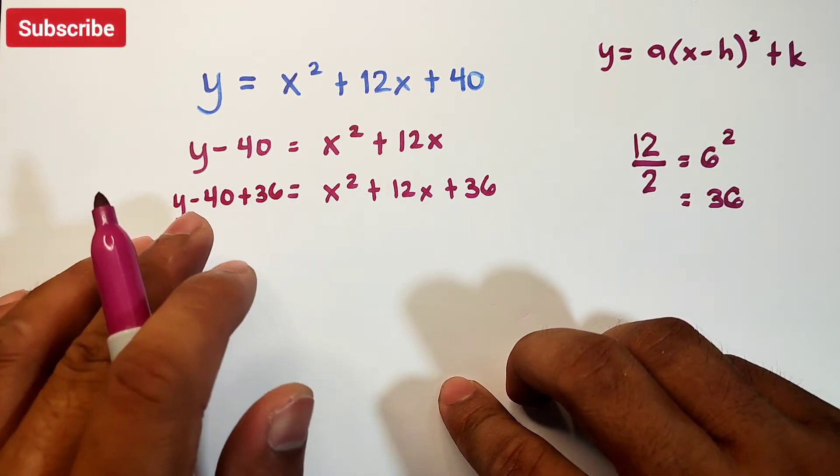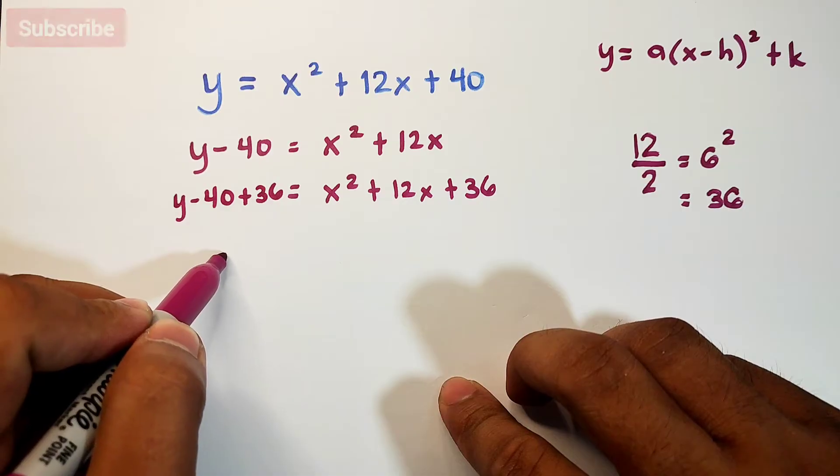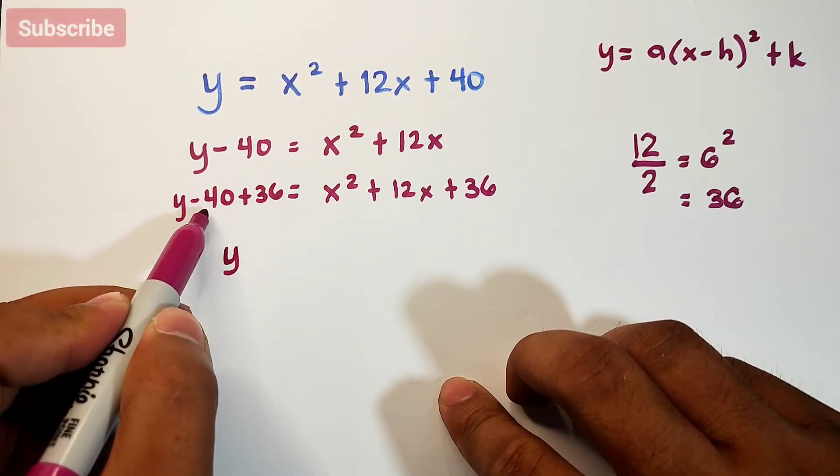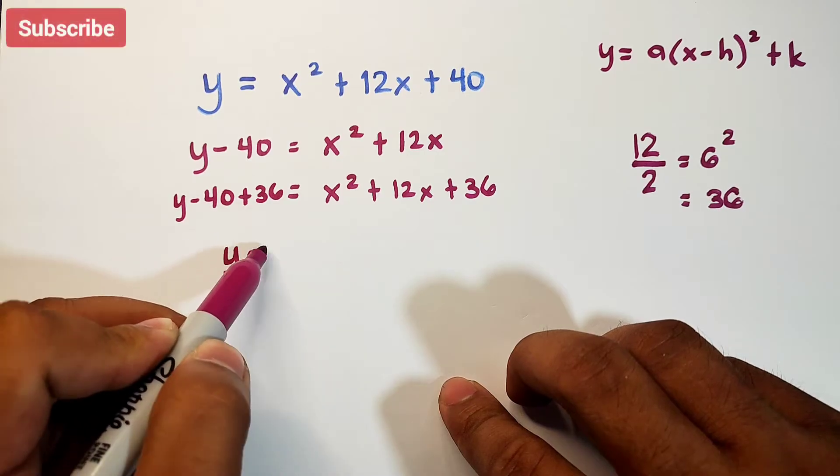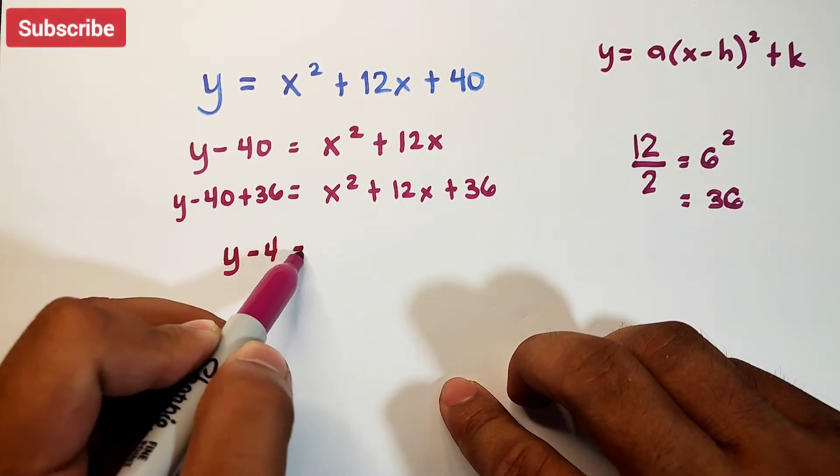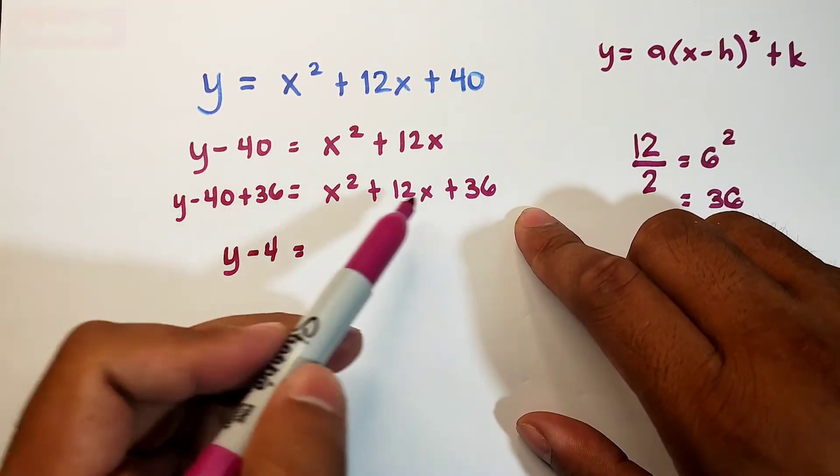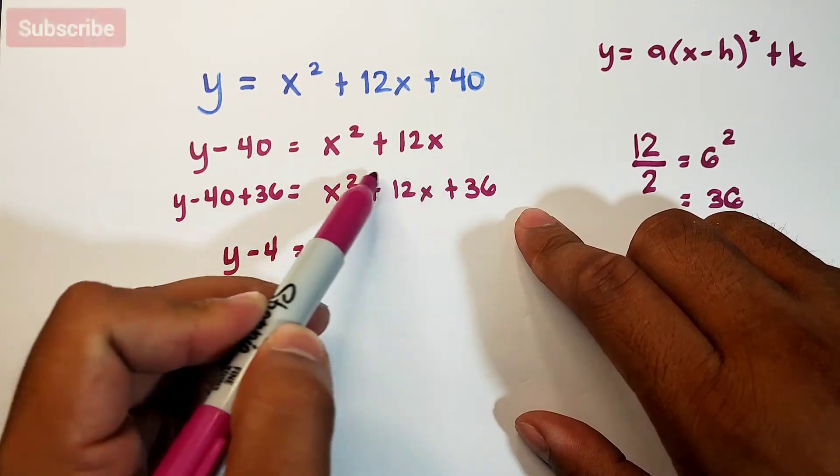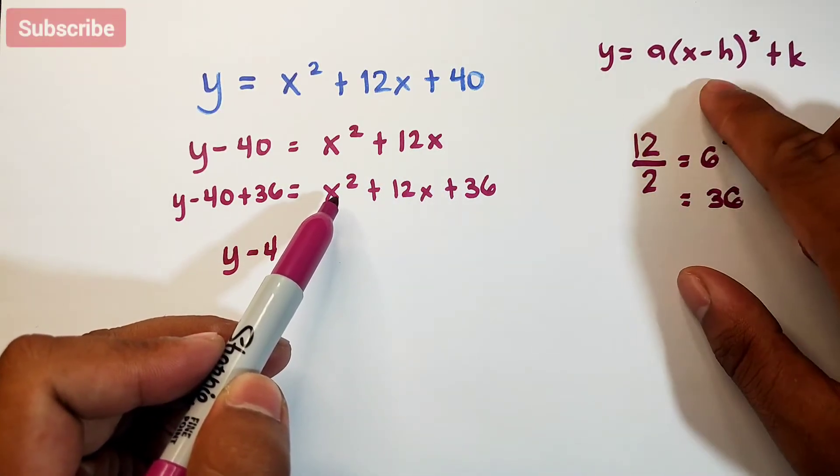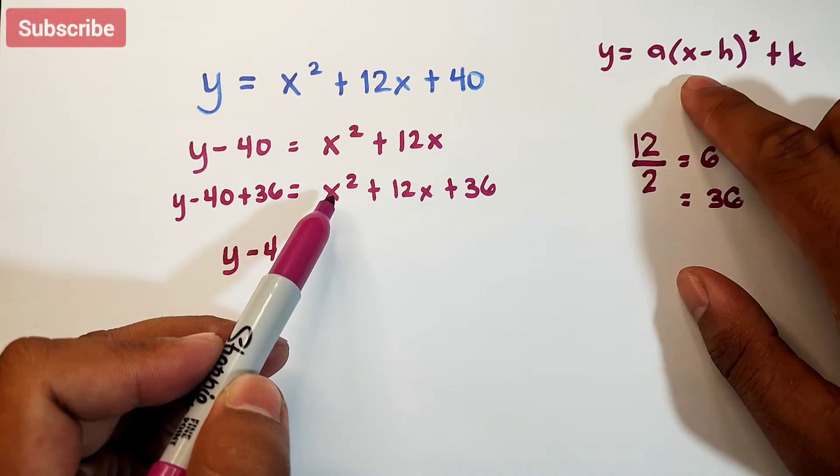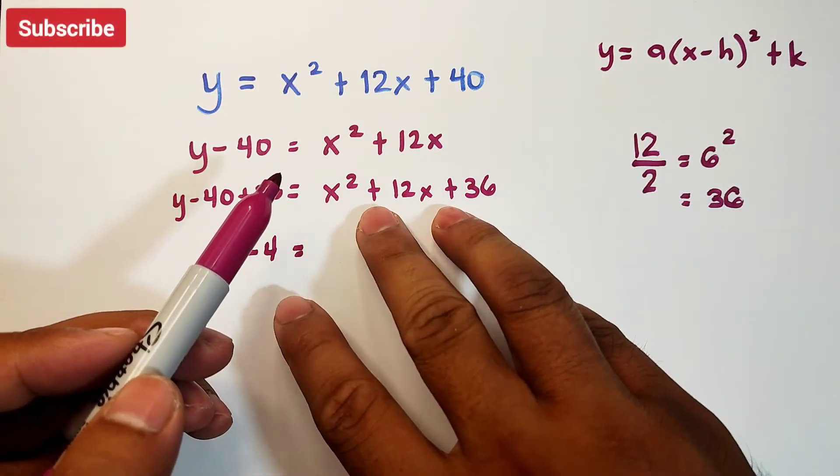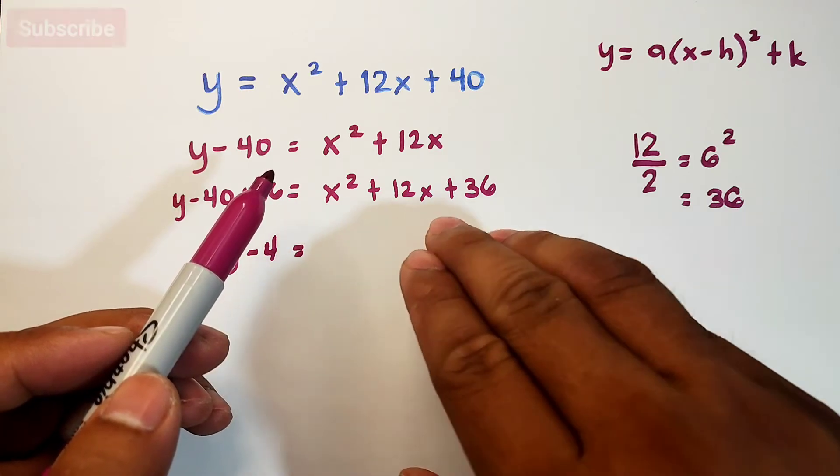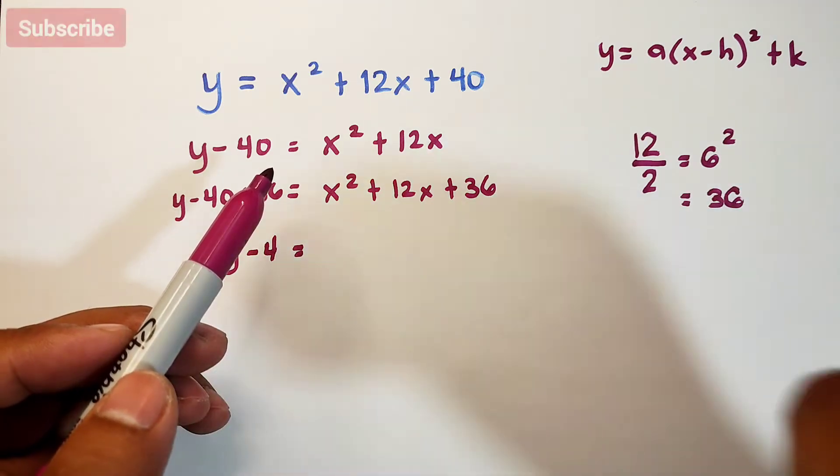We will simplify this. This is y and negative 40 plus 36 is minus 4. Since this is a perfect square trinomial, our target is to make it this form, the vertex form. We need to express this perfect square trinomial as a square of binomial.